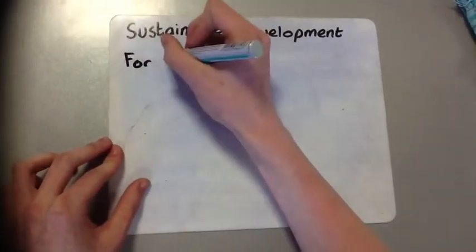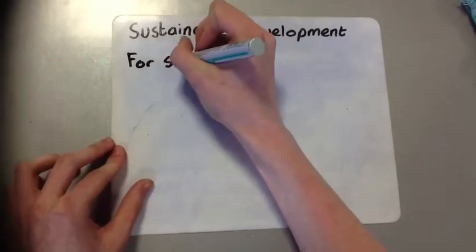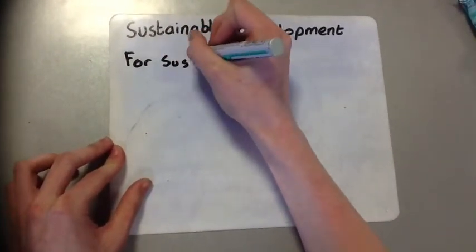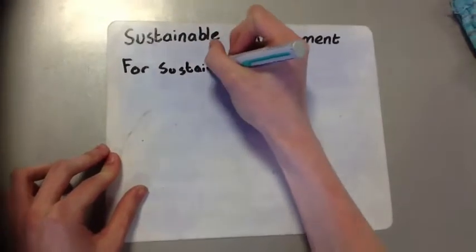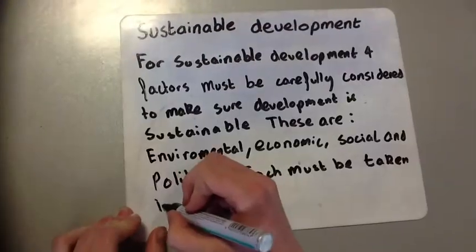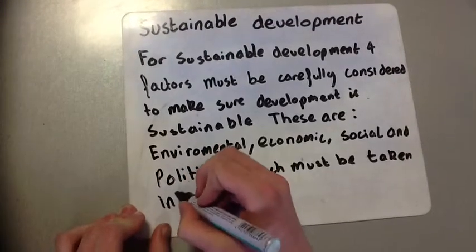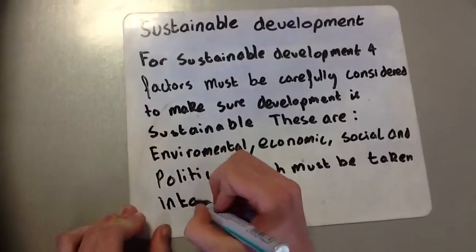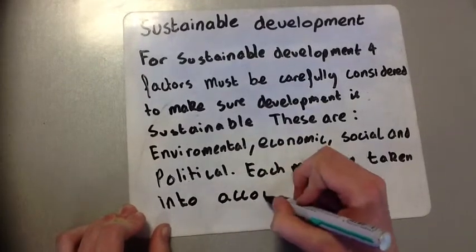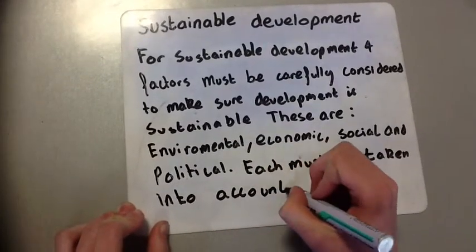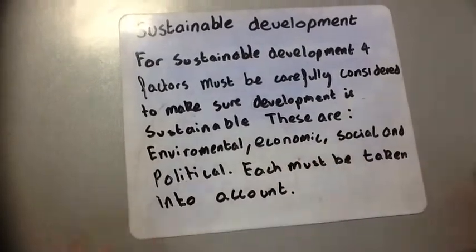In order to be sustainable, we must discuss four key factors. These include economic, environmental, social, and political factors. All four of these factors must be considered in order for us to be sustainable.